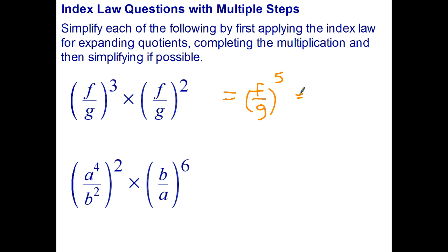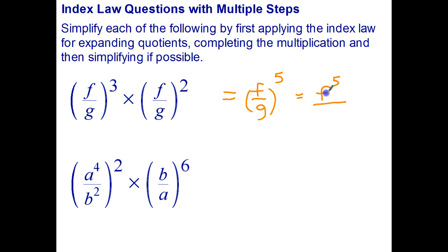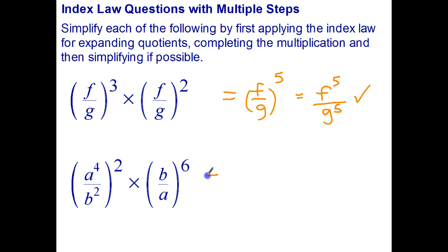You could leave it like that, but let's rewrite it without the brackets. Now we use index law number four, which says F over G to the power of five can be rewritten as F to the power of five over G to the power of five. So we used index law number one to write it as a single power, and then index law number four to write it without brackets.